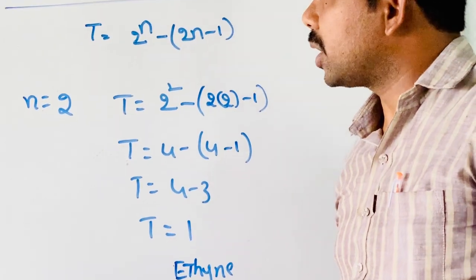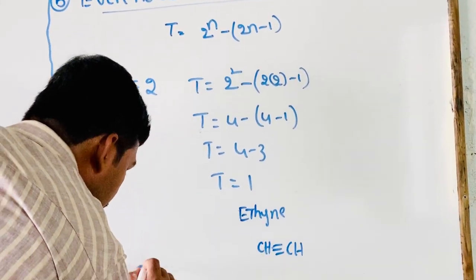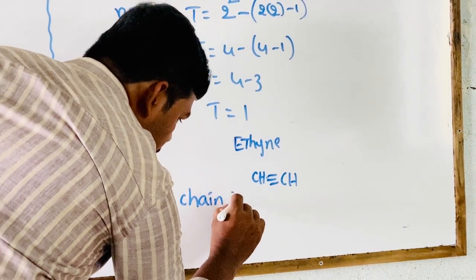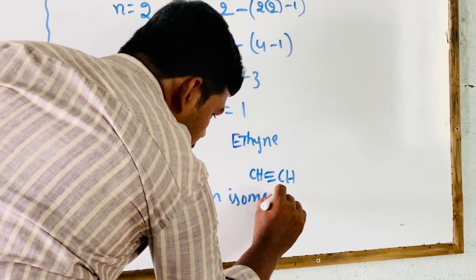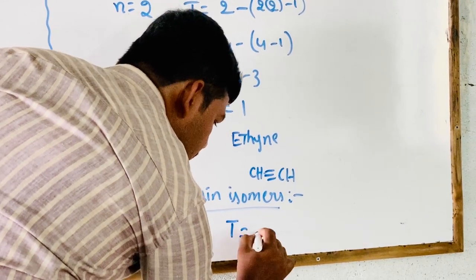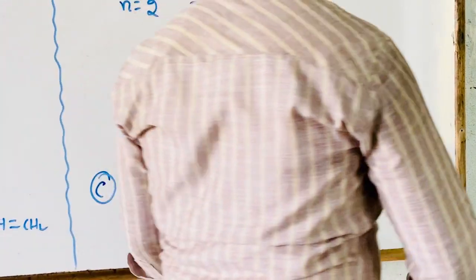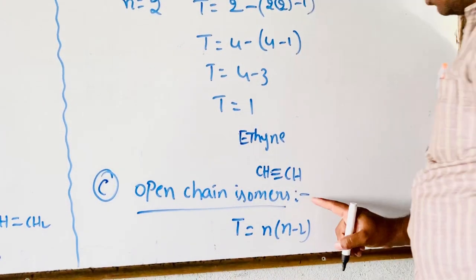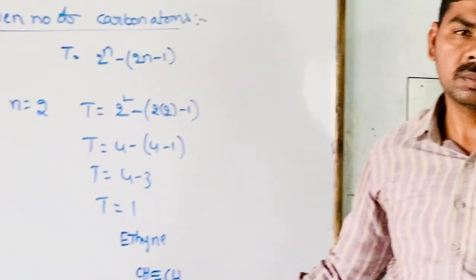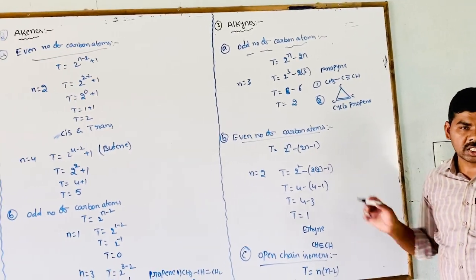For open chain isomers, total number of isomers T = n × (n - 2). This is the calculation of total number of isomers for open chain isomers. Okay students, thanks for watching.